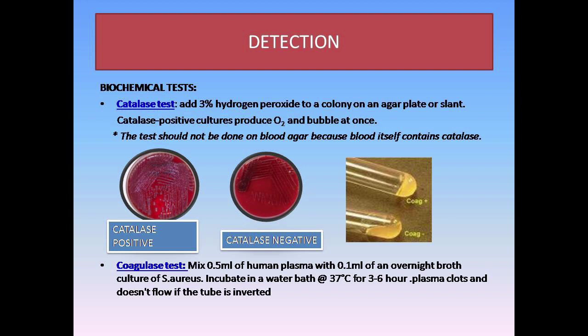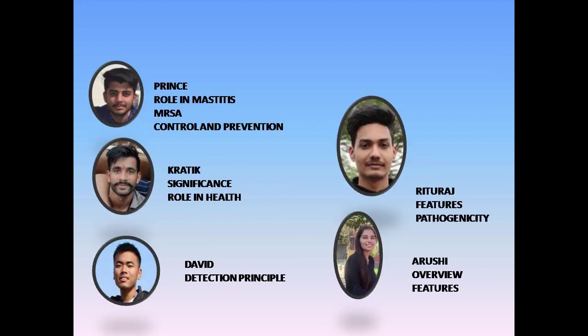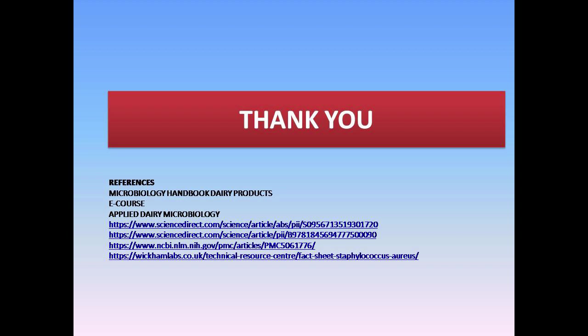So these were some of the ways to detect and isolate Staphylococci. Today we talked about the morphology of Staphylococci, how its shape and features help distinguish it from different species, and how it helps in detection and isolation. We talked about its significance, its impact on the dairy industry, its impact on our health, and the diseases caused by S. aureus. S. aureus is one of the most important species of Staphylococci, and its study helps in prevention and control. This was our short presentation on Staphylococcus aureus. Thank you and have a nice day.